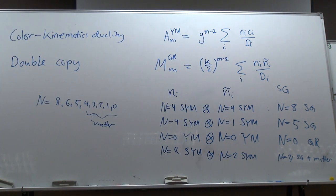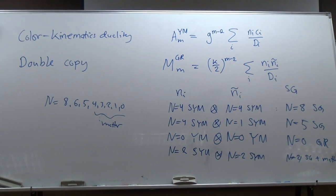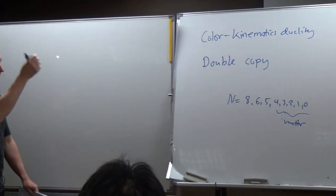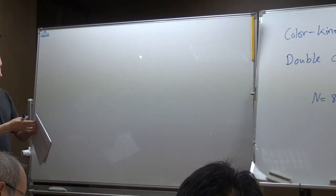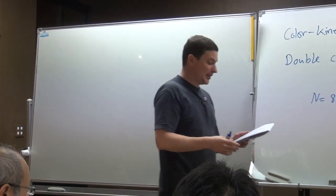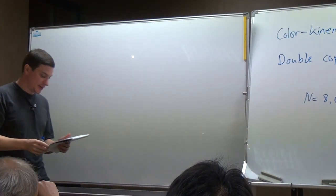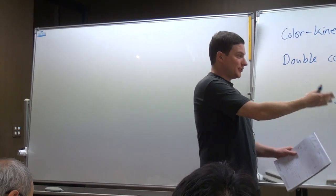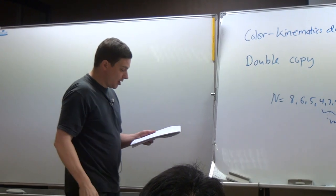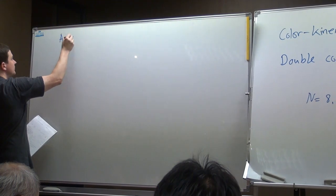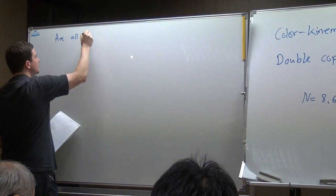We believe that it works in general. All these questions connect to what I'm going to say next. We obviously have examples where we have a range of theories which work, but these theories are a very limited set of all possible supergravities. So you might ask the question: what about supergravities which are not in this classification — do they work?